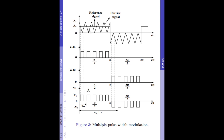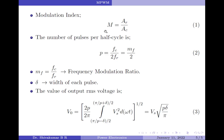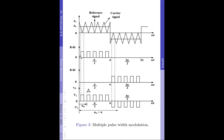Smaller the value of the modulation index, smaller will be the widths of the pulses generated. As the value of M increases, which happens as the value of AR increases, the widths of the pulses generated will also increase. As these pulses are used to drive the transistors in the full bridge inverter circuit, the inverter output accordingly varies, and that is how we control the output voltage of the full bridge inverter. When the modulation index is 0, which happens when AR is 0, no pulses will be generated and therefore the pulse width is 0.